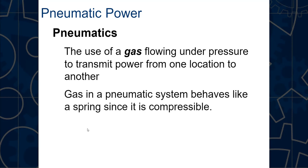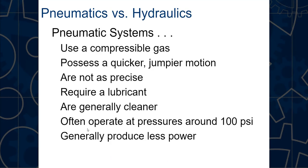The biggest thing to remember is that pneumatics uses air or gas, while hydraulics uses liquid. Gas also acts more like a spring when compressed. Pneumatics uses compressed gas or air, produces quicker or jumpier motion than hydraulics, is not as precise, requires oil in the system occasionally to keep rubber o-rings from drying out, is generally cleaner, typically operates around 100 psi, and produces less power — so you won't see it used for forklifts or construction equipment.